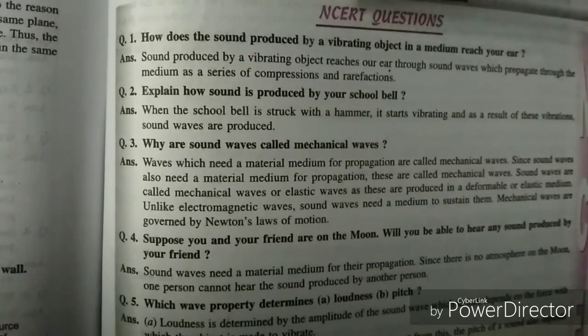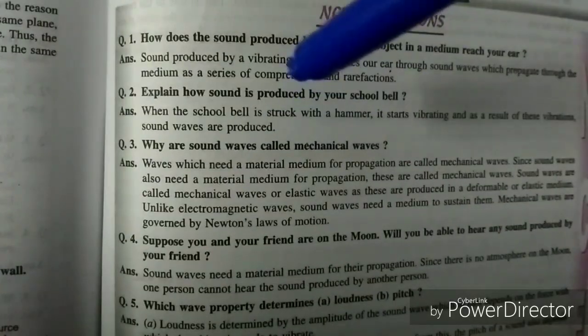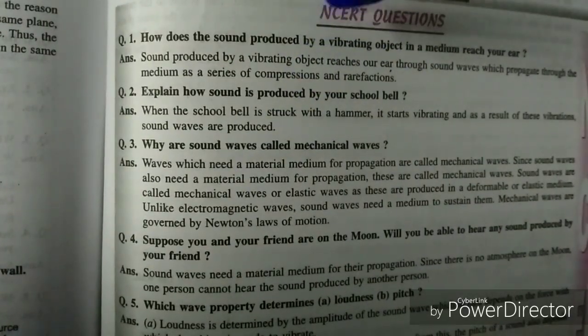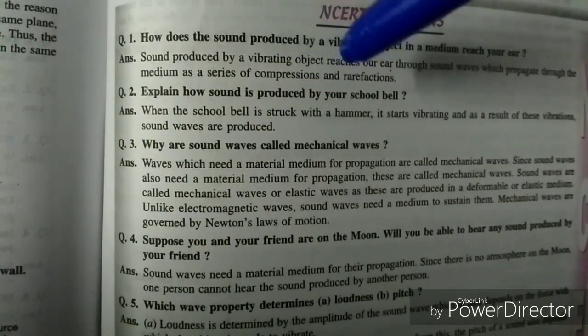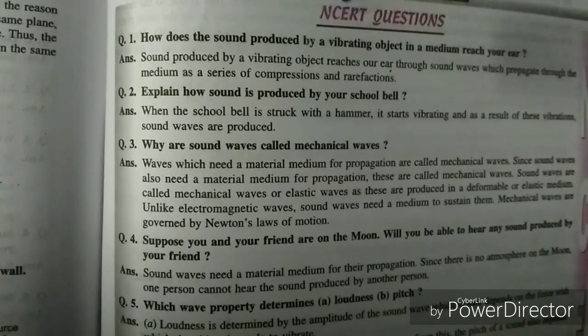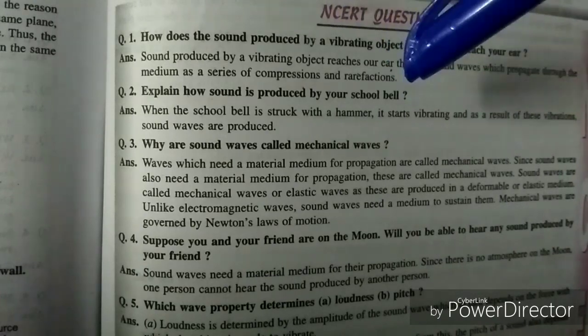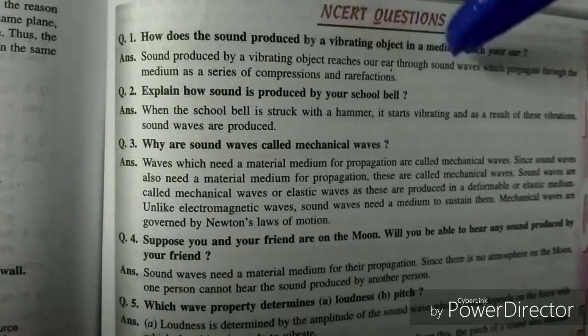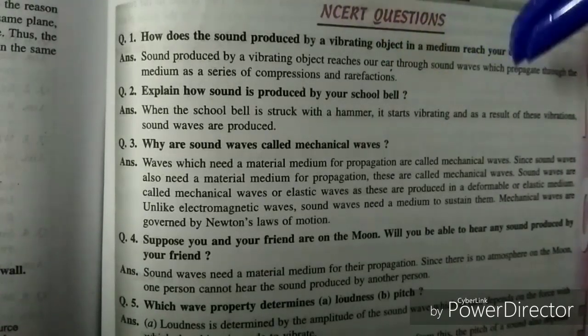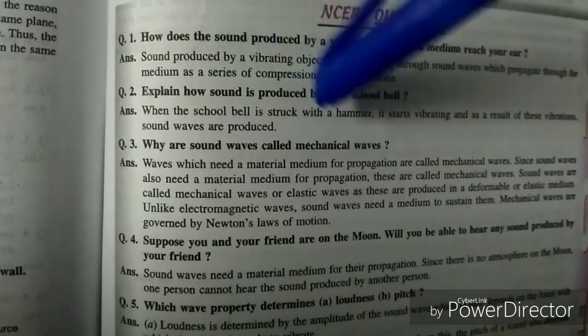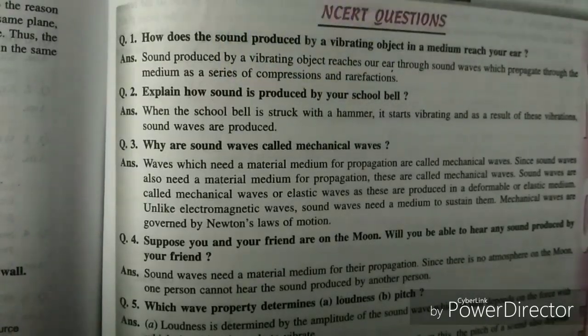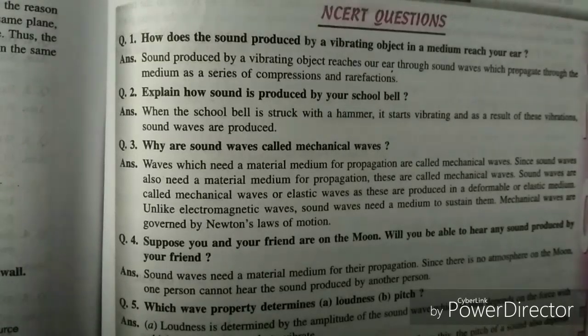This is the answer for your first question, and the second question is very similar to the first one. Explain how sound is produced by your school bell. When the school bell is struck with a hammer, it starts vibrating and as a result of these vibrations, sound waves are produced.